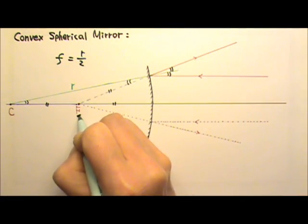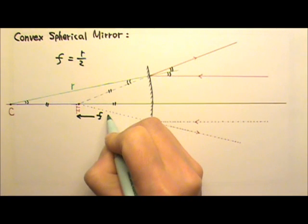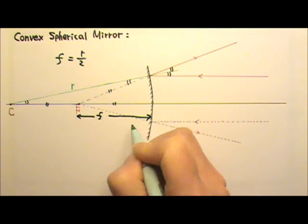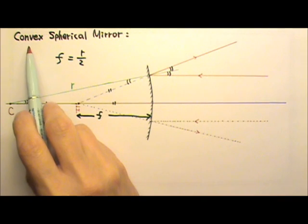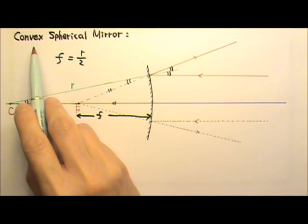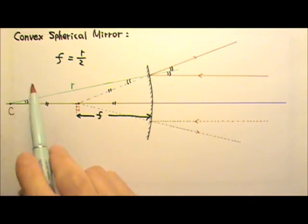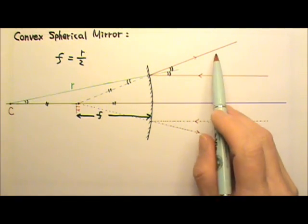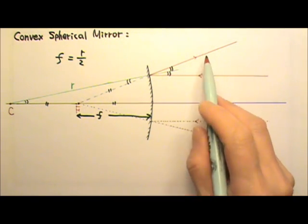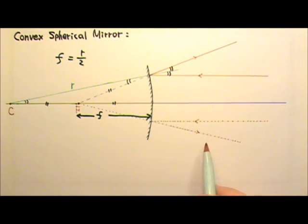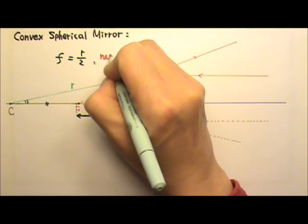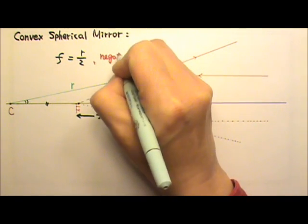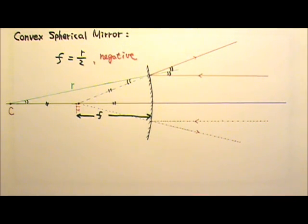The focal length is the distance between the focal point and the center of the mirror. The big difference between a convex mirror and a concave mirror is that a convex mirror diverges light — it does not really focus light. So the convex mirror's focal length is always a negative number because it diverges light instead of focusing it.